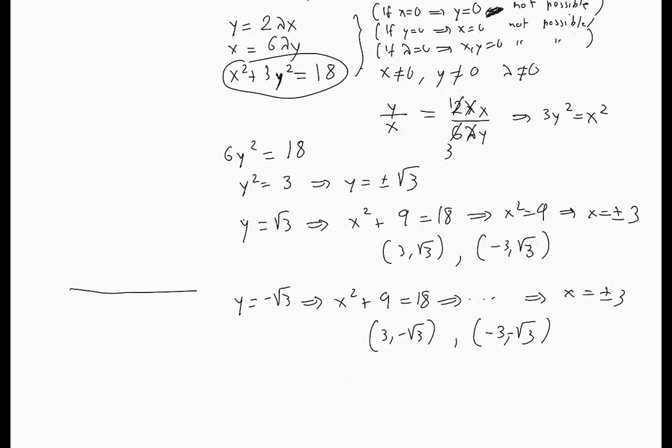So if we use a little table here and evaluate the function at these four critical points that we found, then we will see where the minimum and where the maximum occur. So if we plug this into f(x,y), which is xy, we'll get 3√3, -3√3, -3√3, and 3√3.